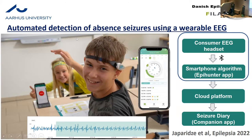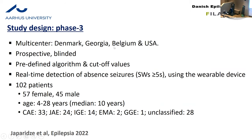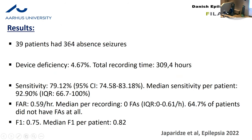This is another seizure type — absence seizures. Here you can see a wearable EEG device with dry electrodes, but here we used a different approach: we trained an AI model to catch these absence seizures. We validated it in a phase three study — prospective, multi-center, 102 patients, 39 of them with seizures, altogether more than 300 absence seizures. The sensitivity of this gadget with the algorithm was around 80% for all seizures, and the median sensitivity per patient was 92%, with a false alarm rate of 0.6 per hour.